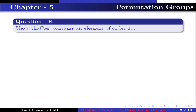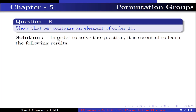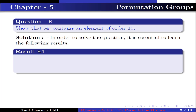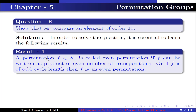Question number 8: Show that A8, the alternating group, contains an element of order 15. In order to solve this, it is essential to learn the following results. Result number 1: A permutation F belonging to Sn is called an even permutation if F can be written as a product of an even number of transpositions, or if F is an odd cycle length, then F is an even permutation.